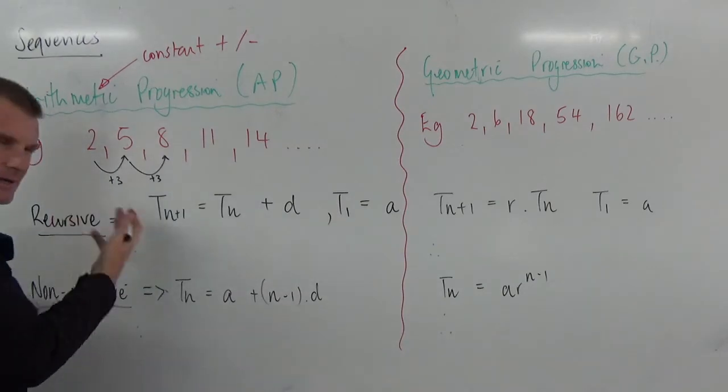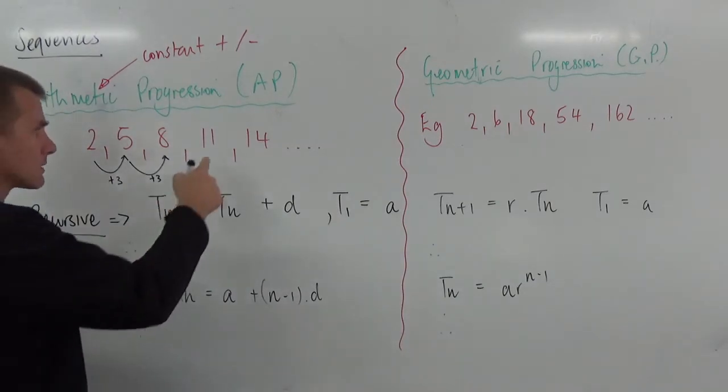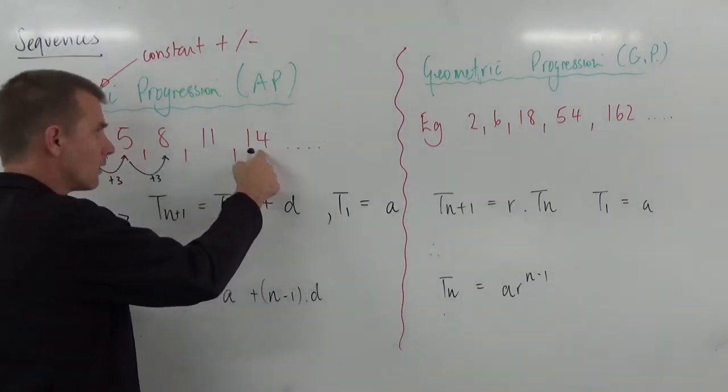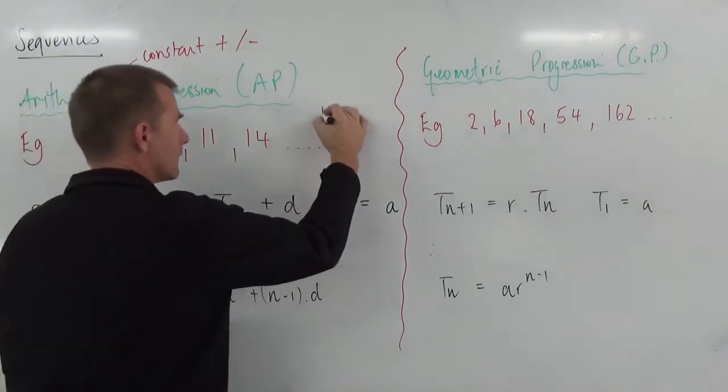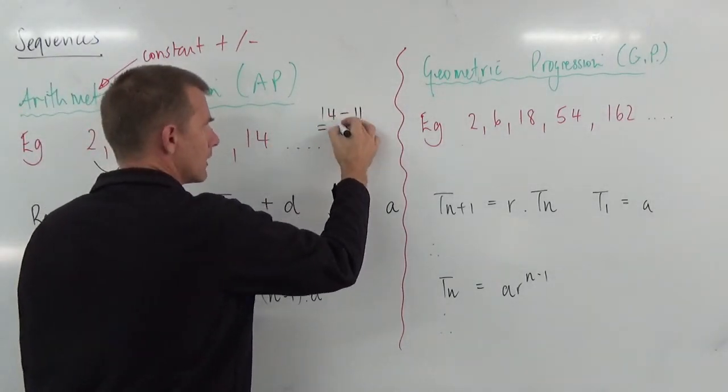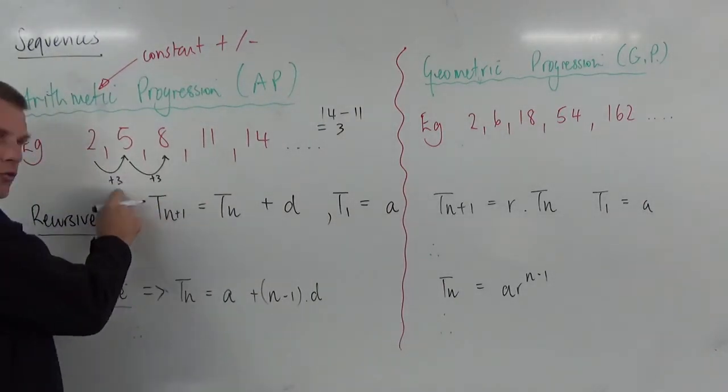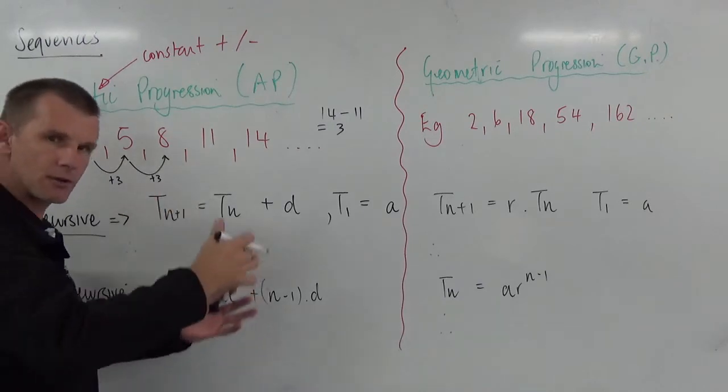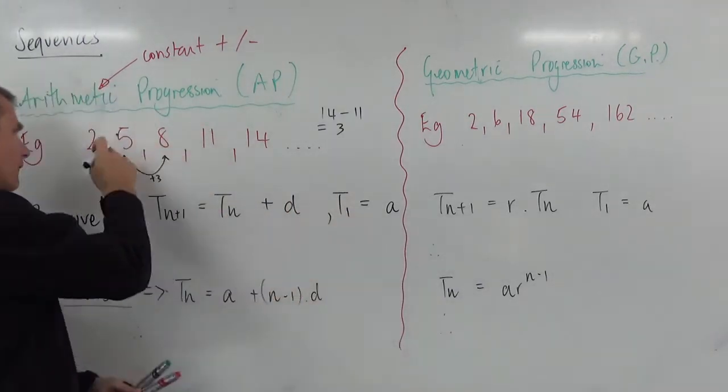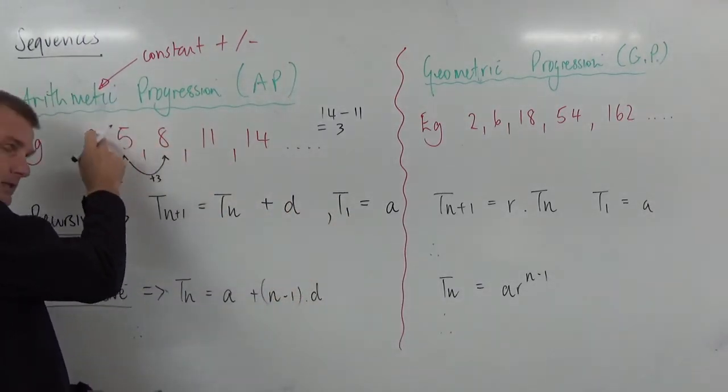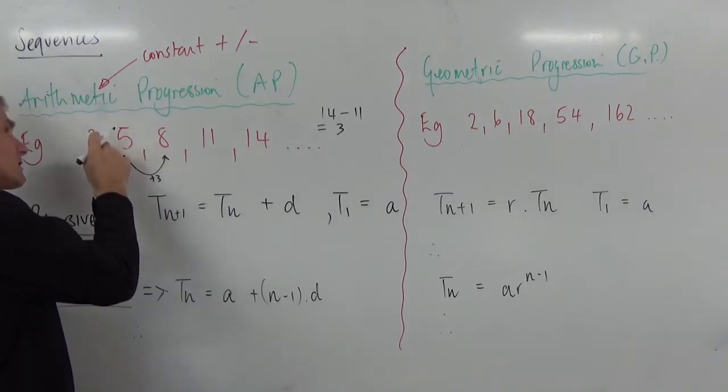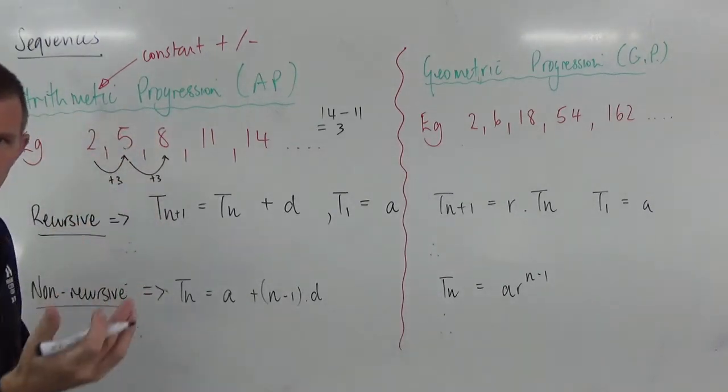How did I figure that out? Well, in this case, it's pretty easy. But look at this. If I went 14 minus 11, I get 3. Well, that 3 is what we call the constant difference. It's the constant thing that I'm adding each time. It's the difference between successive, one after another, successive terms of my sequence.